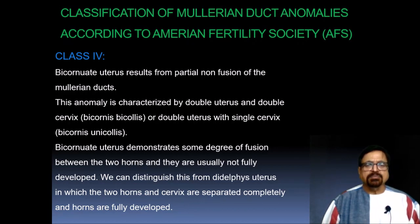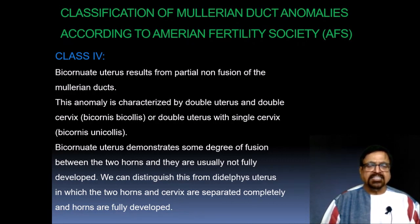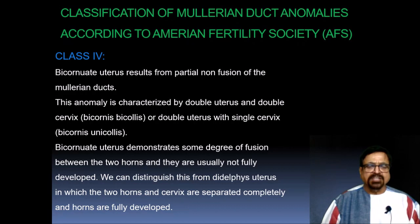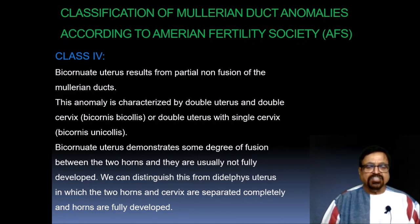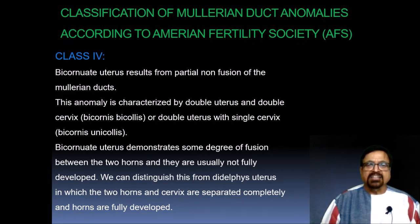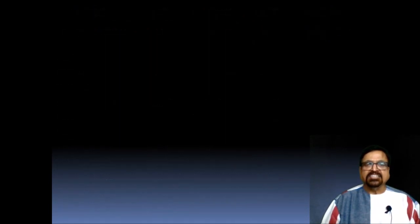Class 4 — the bicornuate uterus — results from the partial fusion of the Mullerian ducts. This anomaly is characterized by either double uterus with double cervix (bicornis bicolis) or double uterus with a single cervix (bicornis unicolis). The bicornuate uterus demonstrates some degree of fusion between the two horns, and they are usually not fully developed. This can be distinguished from uterus didelphys, in which the two horns of the cervix are completely separated and the horns are fully developed.